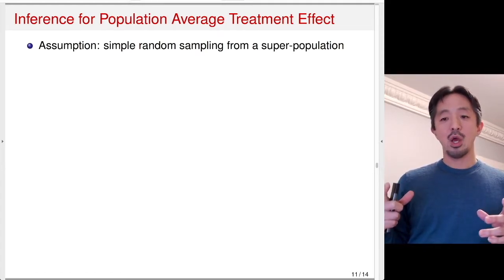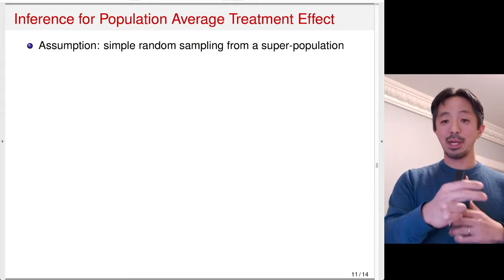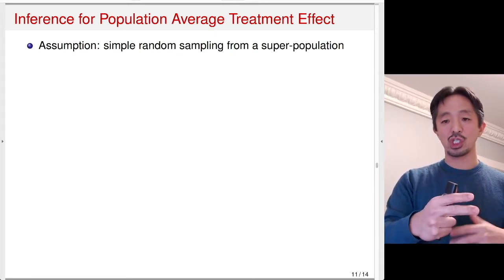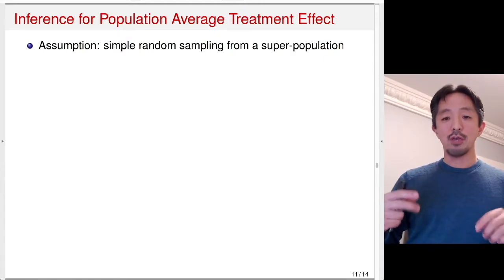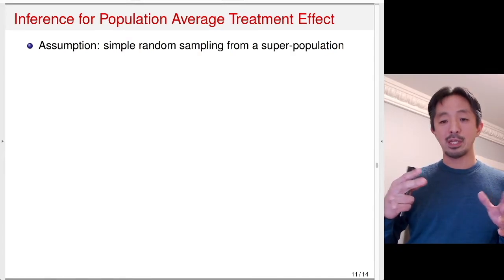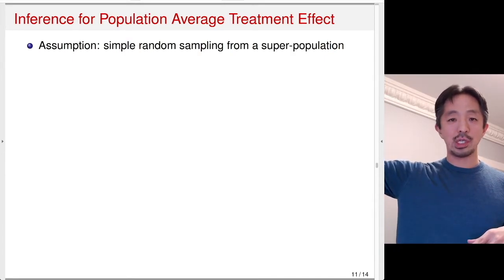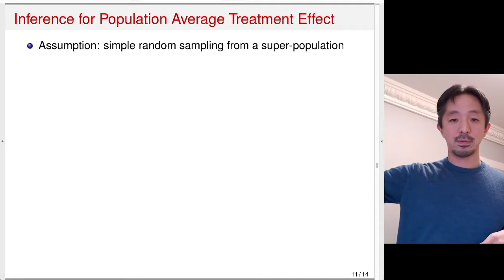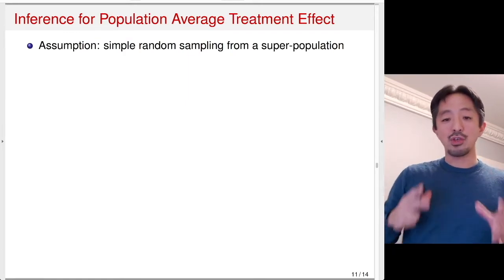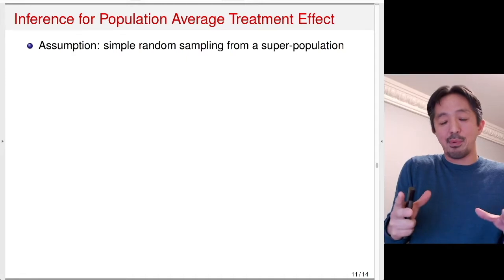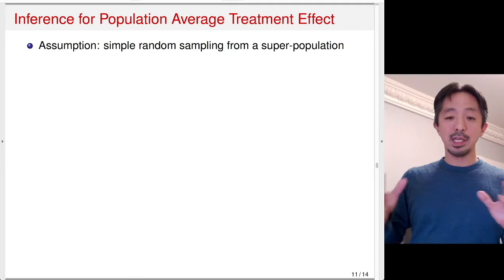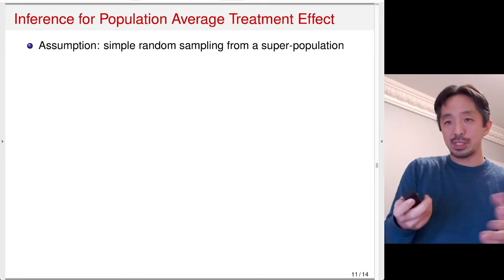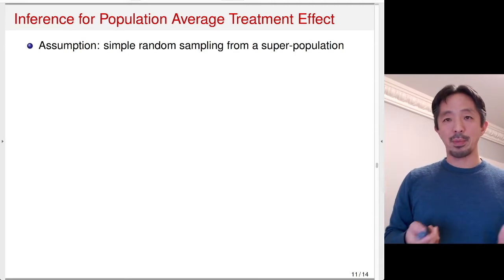So instead of just asking what would happen if everybody in my sample gets a treatment versus nobody gets a treatment in my sample, we can say what would happen if we administer this treatment to everybody in the population compared to nobody gets this treatment in the population. That's a population inference. We can use the experiment conducted on the sample to infer about the population, so long as the sample is representative of the population. If we assume simple random sampling, then we can make that assumption.